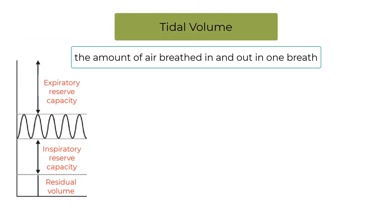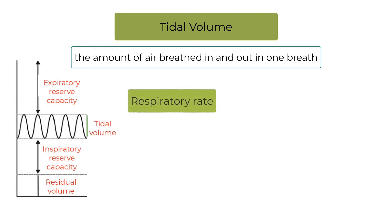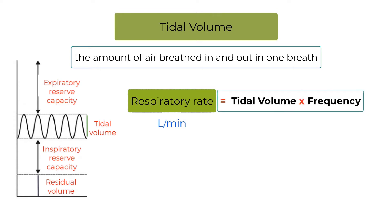The tidal volume is the amount of air breathed in and out in one breath. Respiratory rate, or ventilation, has units of liters per minute and is determined by the formula: respiratory rate equals tidal volume times frequency. Thus, the amount of air that lungs circulate per minute is the product of how much air is in each breath and how many breaths there are per minute.